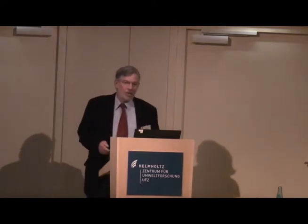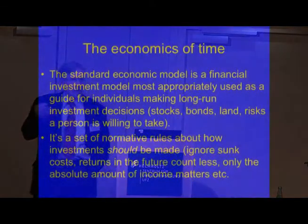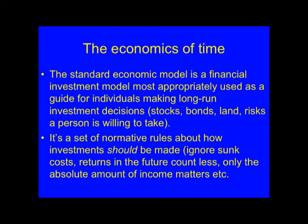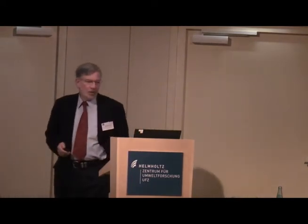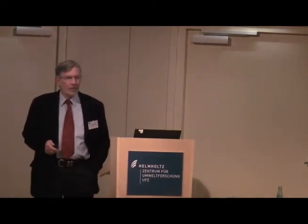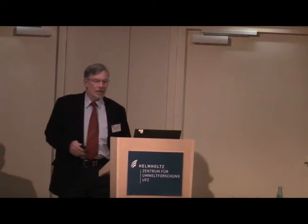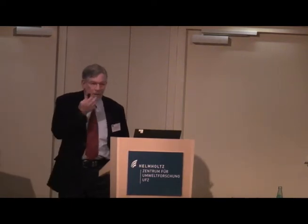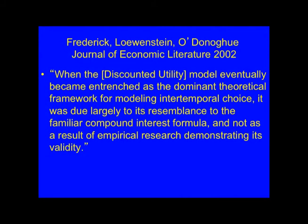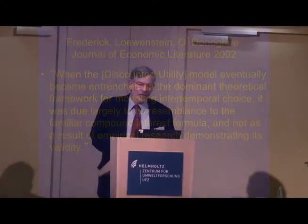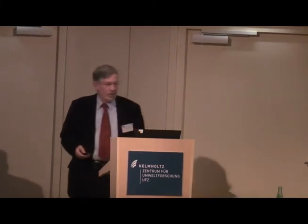The traditional economic assumption is: you should ignore sunk costs, returns in the future count less, only the absolute amount of income matters, you don't worry about relative income. There's an excellent paper on this by Frederick, Loewenstein, and O'Donoghue in the Journal of Economic Literature in 2012. It's a really long article — they do a thorough job on the history of discounting, even getting into the ethical dimensions. They say: when the discounted utility model eventually became entrenched, it was due largely to its resemblance to the familiar compound interest formula, and not as a result of empirical research demonstrating its validity.